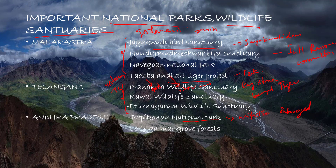Mangroves are shrubs or small trees that grow in coastal or brackish water in the intertidal zone, where there is very little oxygen and waterlogged mud. They are salt-tolerant trees called halophytes. The Koringa Mangrove Forest is situated at the confluence of the Godavari River and the Bay of Bengal.